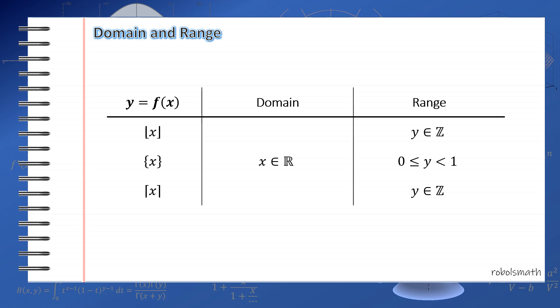The range, however, is different. For floor and ceiling, they're both in the set of integers, but the fractional part is always between 0 and 1, where 0 may be the case. This is what I mentioned earlier, it's always in the interval from 0 to 1, but it will never be 1. It can be 0, but it cannot be 1.